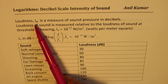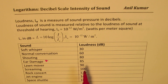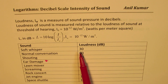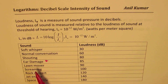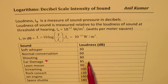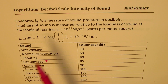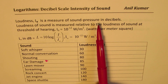Loudness L is a measure of sound pressure in decibels. We have a table here which gives you loudness for different kinds of sounds, beginning with a soft whisper which is 30 decibels. Loudness is always measured in decibels, and the ear can be damaged if the loudness is 85 decibels or more. So most sounds like screaming and rock concerts are very damaging sounds. Sound exerts pressure on your ear and that can be damaging.